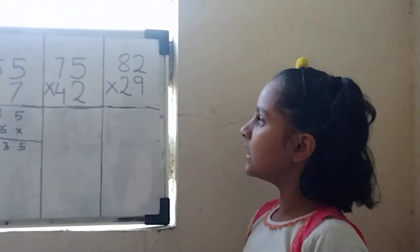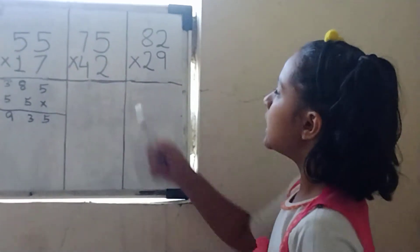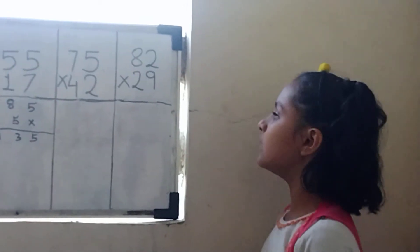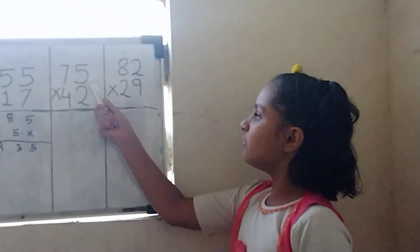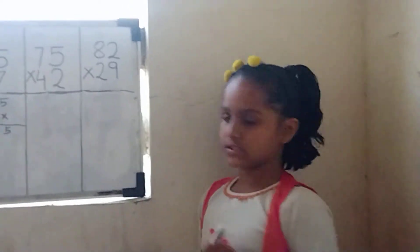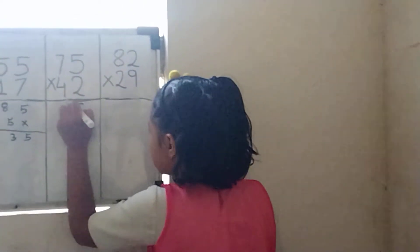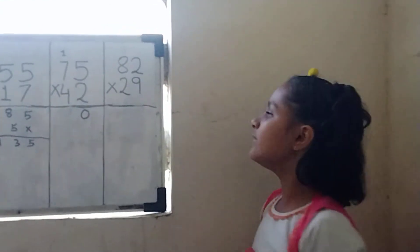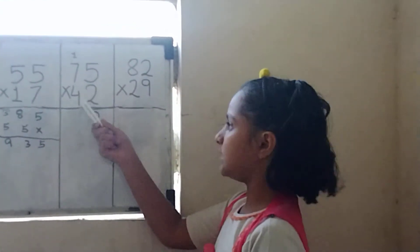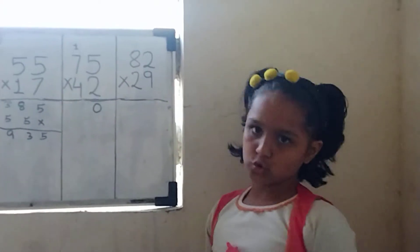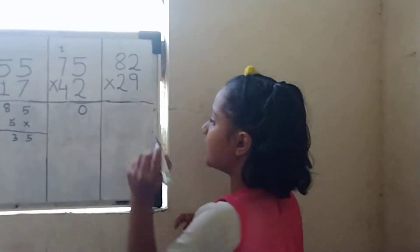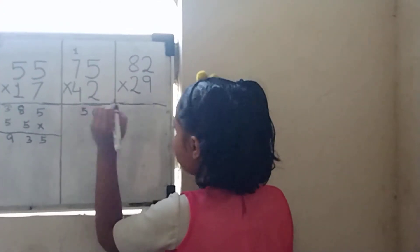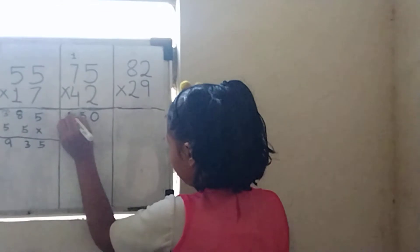Then we will take the third sum: 75 multiplied by 42. Then we will multiply 5 multiplied by 2 equals to 10. Then we will write 0 here and 1 will be carried up. Then we will multiply 7 multiplied by 2 equals to 14, and plus 1 it will be 15. Then 5 will be here and 1 will be carried here.